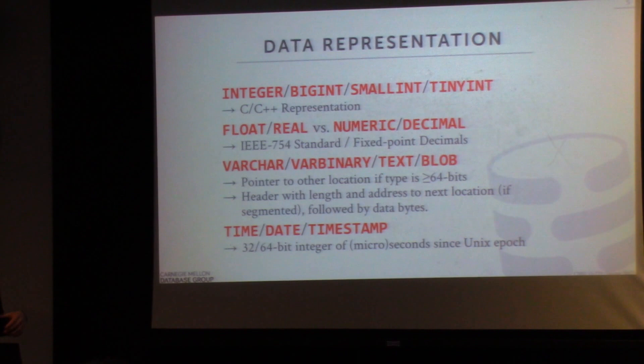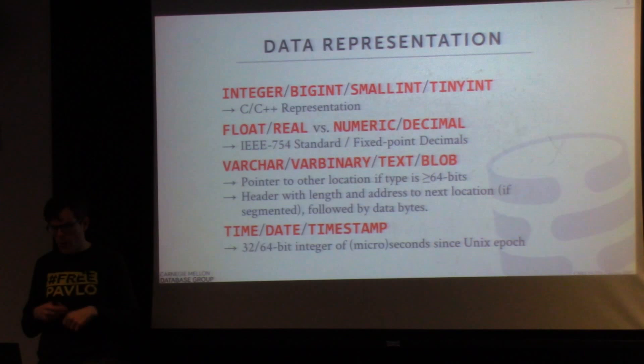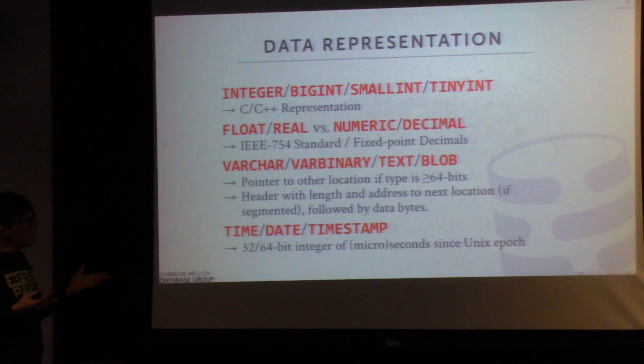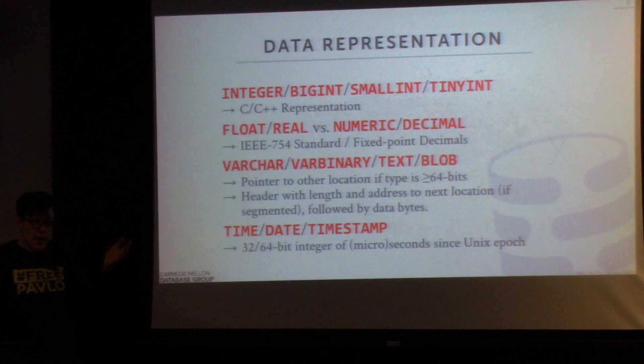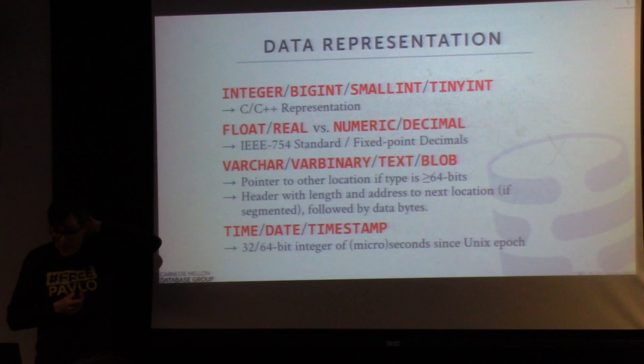The way you represent low-level data types depends on what the type is. For basic integers — integer, bigint, smallint, tinyint, mediumint, the 16-, 32-, or 64-bit integers — we use the native C or C++ representation because this is the native representation in the low-level architecture. We just declare a 32-bit integer in C or C++ and that's what gets stored in memory. That's pretty straightforward.